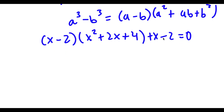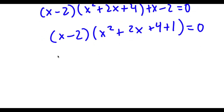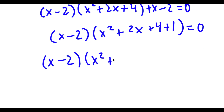So now if I factor out x minus 2, I get x minus 2 times x squared plus 2x plus 4 plus 1 is equal to 0, which is the same thing as x minus 2 times x squared plus 2x plus 5 is equal to 0.